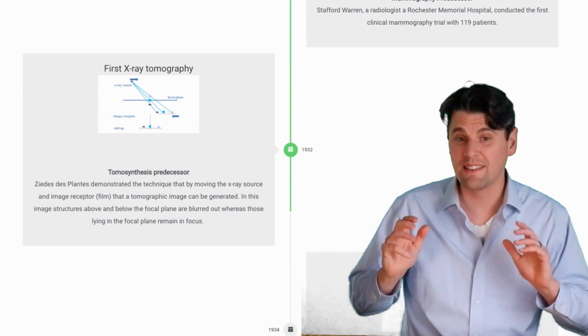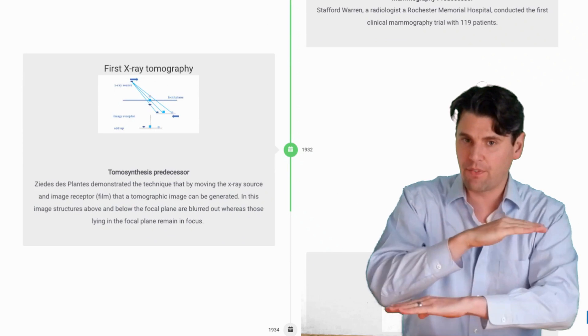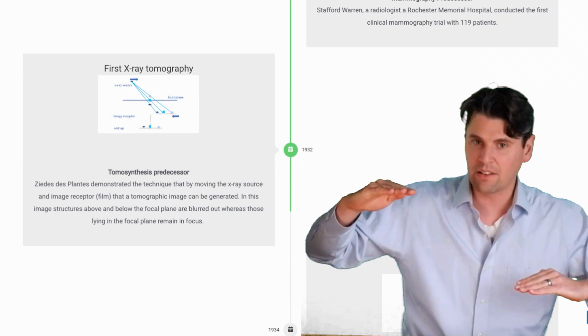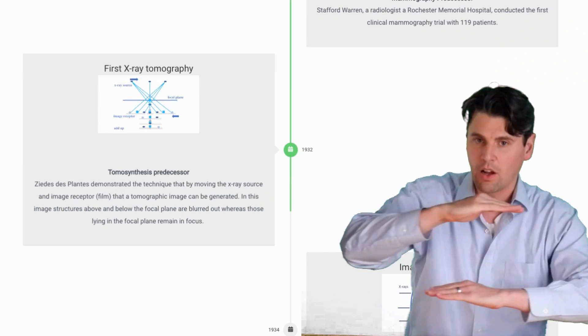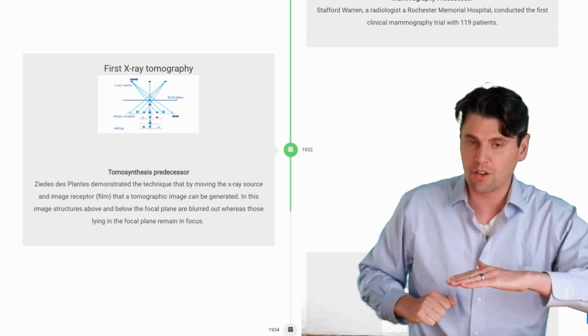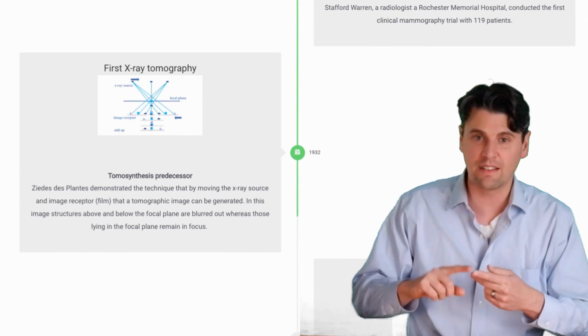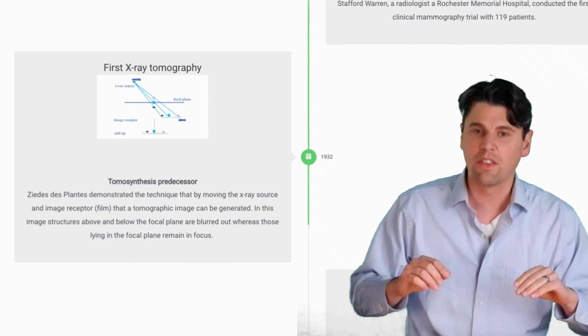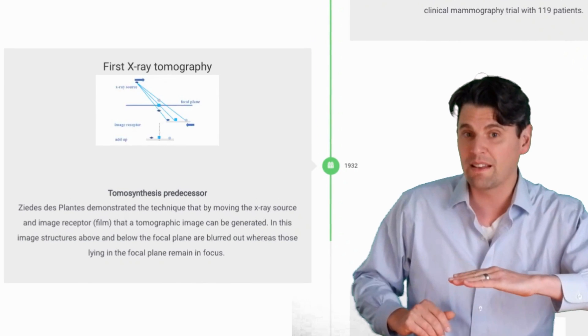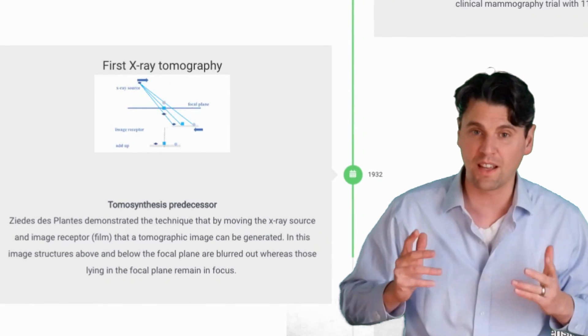In 1932, ZD Stepans actually demonstrated linear tomography. So actually using film, if you took the film and the X-ray source and you move them along a line like this, you could actually blur out the structures which are above and below a given plane. Before tomosynthesis, before computed tomography, the first time in which structures within a given plane were made to stand out with respect to the structures below or above them using X-rays.